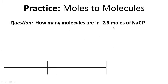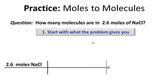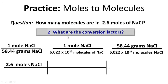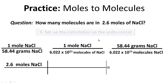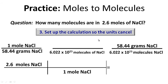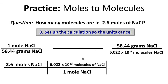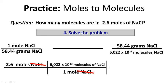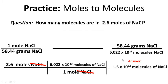One more: how many molecules are in 2.6 moles of sodium chloride? Pause and work on this, then hit play to check. Step one: start with 2.6 moles of sodium chloride. Step two: the question involves molecules and moles, so our conversion factor uses molecules and moles. We put moles on the bottom and 6.02 times 10 to the 23rd molecules on top. Units cancel, and we solve: 2.6 times 6.02 times 10 to the 23rd divided by 1 gives us 1.5 times 10 to the 24th molecules of sodium chloride.